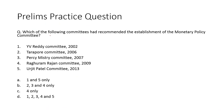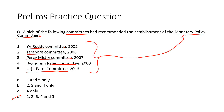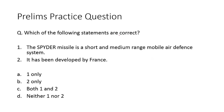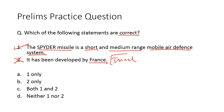Now let's take up the practice questions. Which of the following committees had recommended the establishment of the Monetary Policy Committee? The options are the YV Reddy Committee, Tarapore Committee, Parsi Ministry Committee, Raghuram Rajan Committee, or Urjit Patel Committee. The correct answer is option D — but actually, all five committees had recommended the establishment of the Monetary Policy Committee. For the second question: The SPIDER missile is a short and medium range mobile air defence system. It has been developed by France — this is wrong. The SPIDER missile was developed by Israel. So the first statement is correct and option A is the correct answer.